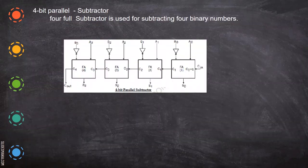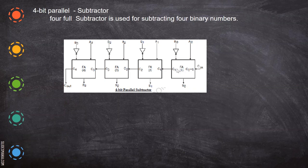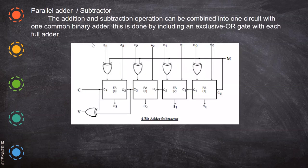Now what we just saw is three-bit subtraction using a full subtractor. If we want to do four-bit simultaneous subtraction, we go for a four-bit parallel subtractor — just like we saw for the binary adder, here we have the binary subtractor. The circuit uses full subtractors connected in stages, with complements applied to the B inputs.